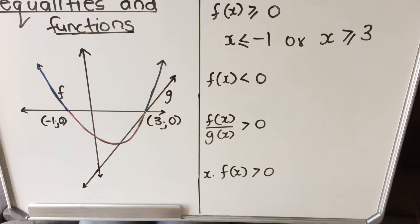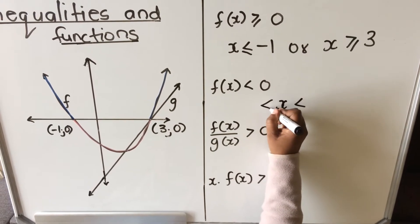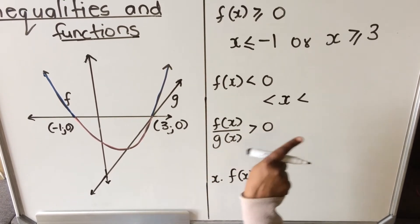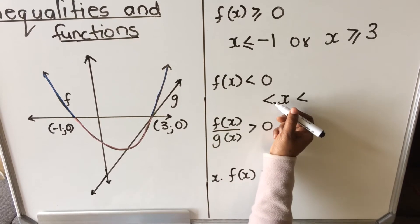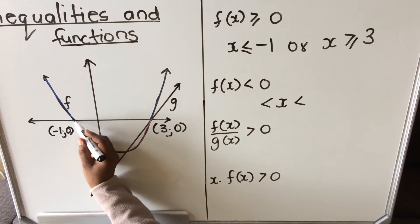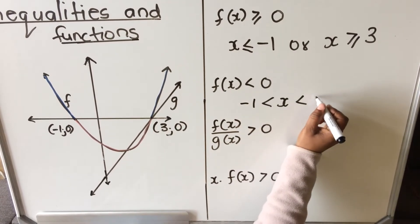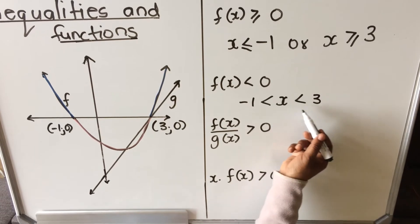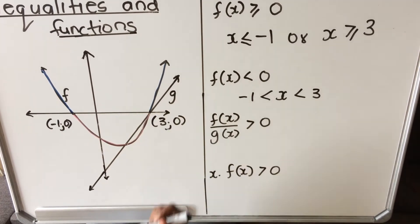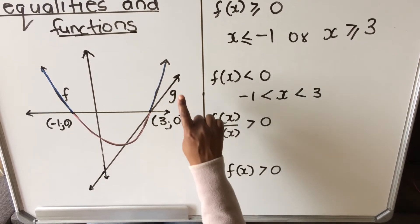When all the values are together like that — not split into separate parts — you use 'and.' Your inequalities are always facing in the same direction. So you say x is greater than a value and x is less than a value. You write the smaller value first: minus 1, and the bigger one: 3. So these x-values make my function negative — below the x-axis.